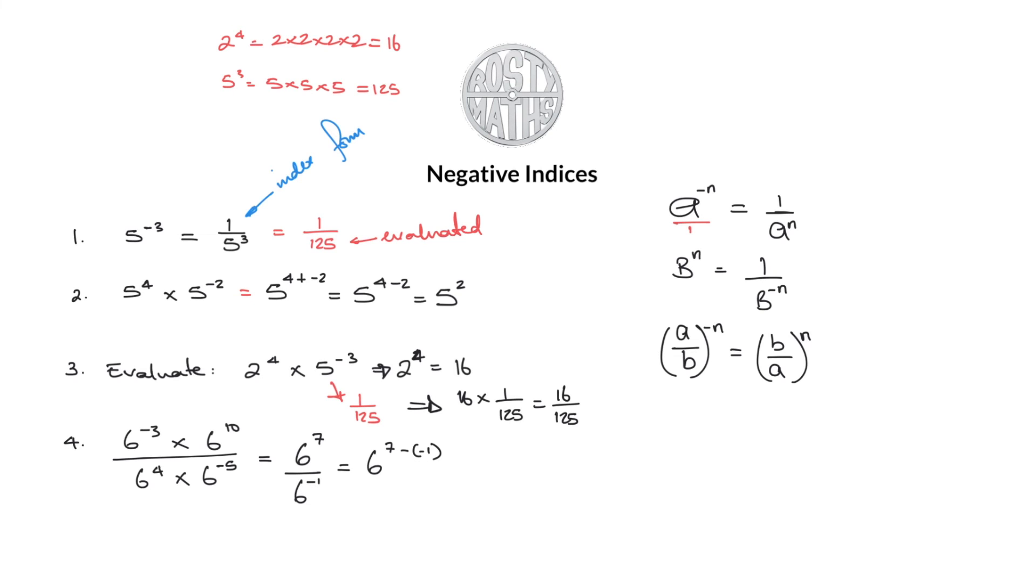And if you don't know why, click on a pop-up banner and go check my video on multiplying and dividing negative numbers. So this becomes six to the power seven add one, which is six to the power eight in index form. And just like that, this video is at an end.